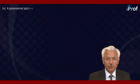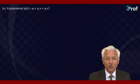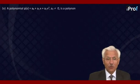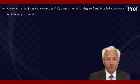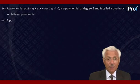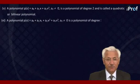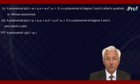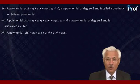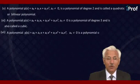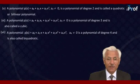A polynomial P(x) equal to A0 plus A1x plus A2x squared, where A2 is not zero, is called a polynomial of degree two and is also called a quadratic or bilinear polynomial. Similarly, a polynomial of degree three is also called a cubic. A polynomial where A4 is not zero is a polynomial of degree four and is also called a biquadratic polynomial.